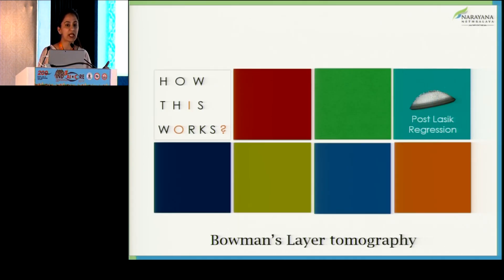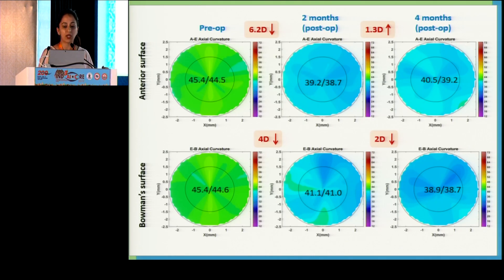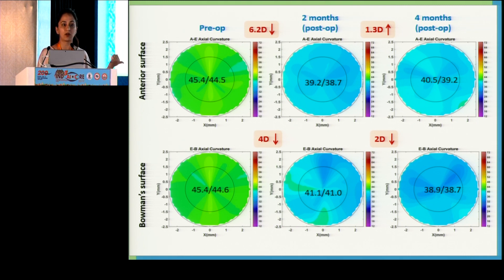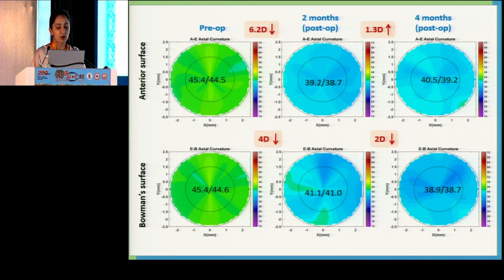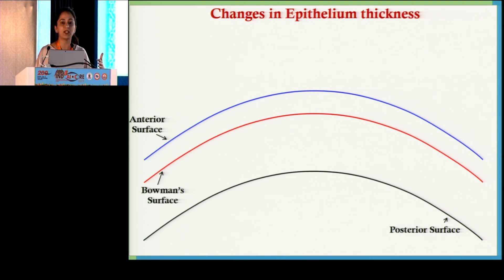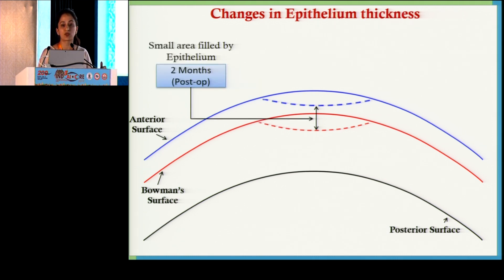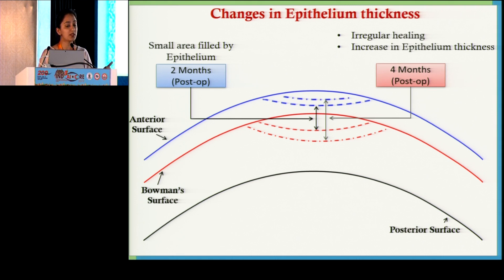Post-LASIK regression is a problem we all face, and we tend to blame ourselves for it, but that's not always the scenario. This patient had an ablation of approximately six diopters, and after four months post-op the patient had a refractive error again. When we looked at this with our modality, it was actually not a case of regression — the Bowman's was showing us flattening. The epithelium tries to mask every irregularity; it fills in all the craters and gives us a pseudo picture of regression.